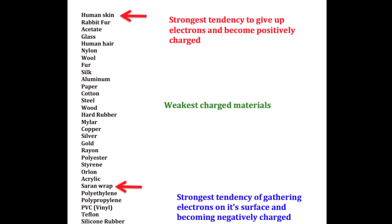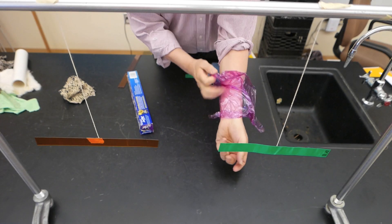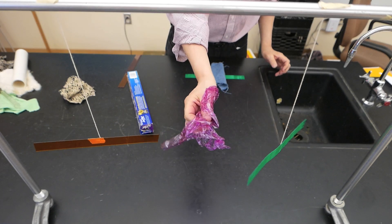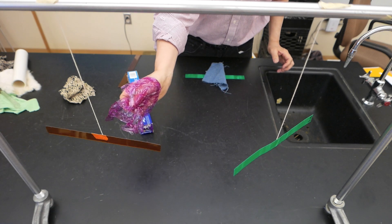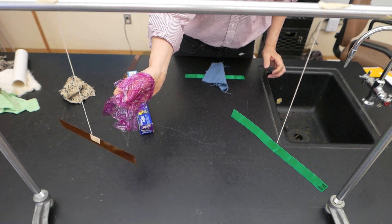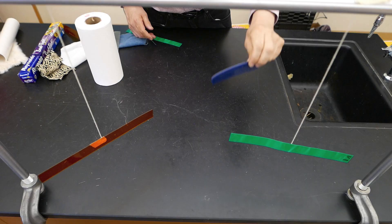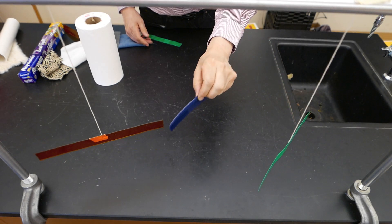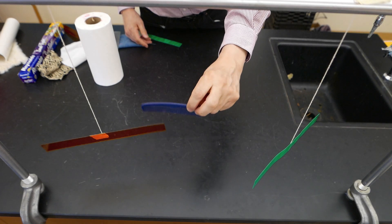Let's try two more. I'm going to take Saran Wrap and rub it against my hand. And the Saran Wrap should become negatively charged. And that's what we see here. It's pushing the vinyl but it's attracting the acetate. I rub this comb through my hair a few times. It pushes away the vinyl and attracts the acetate, which means it must be negatively charged.